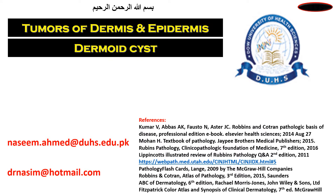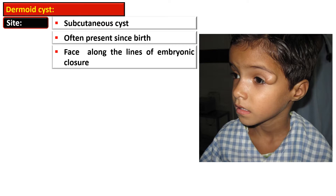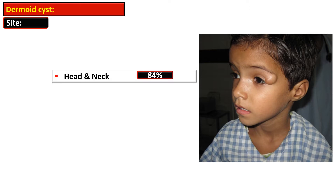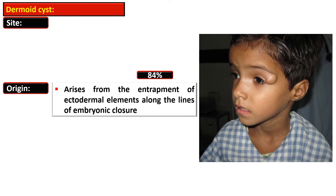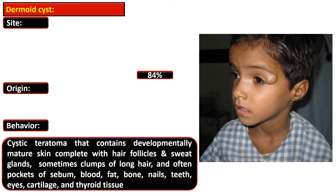Dermoid cysts are subcutaneous cysts that are often present since birth and are found on the face along the lines of embryonic closure. About 84% of dermoid cysts are located in the head and neck region. They arise from entrapment of ectodermal elements along the lines of embryonic closure and are true hamartomas.